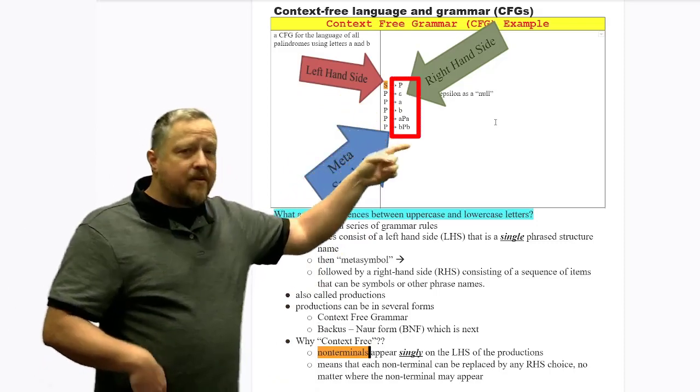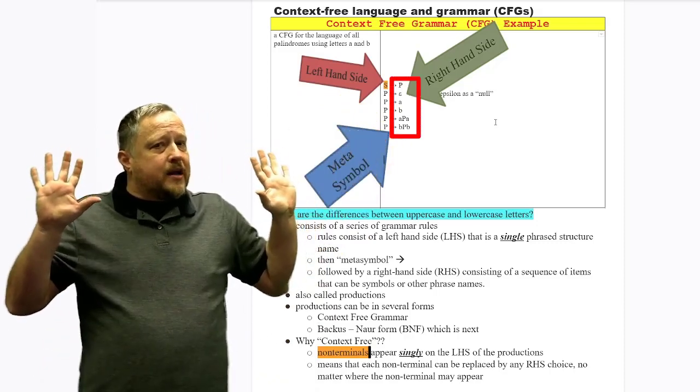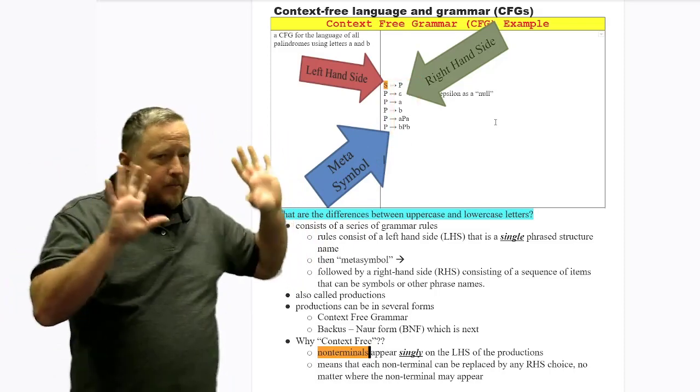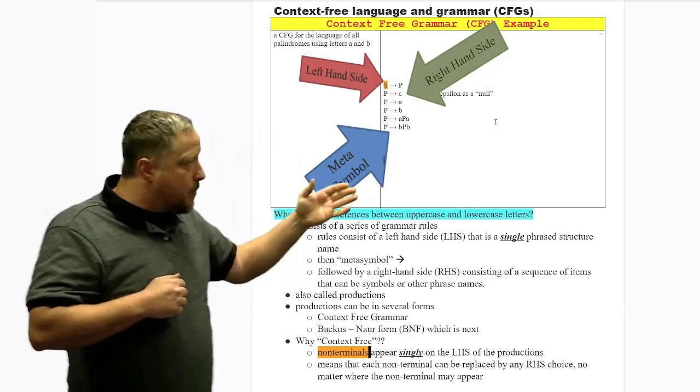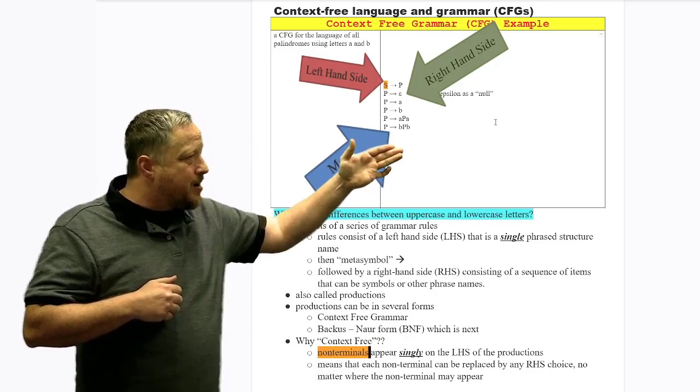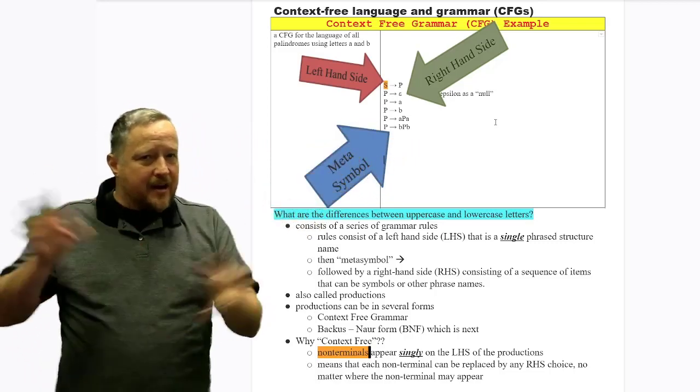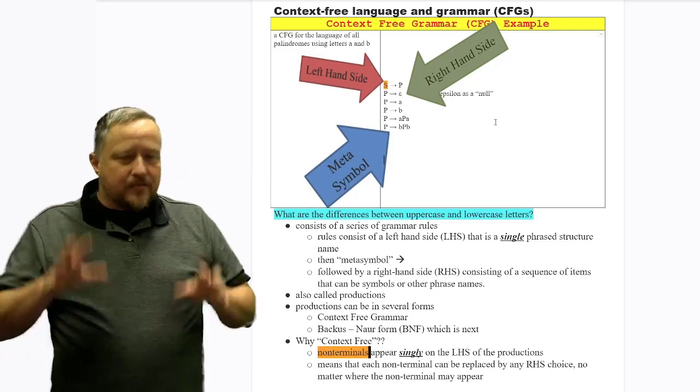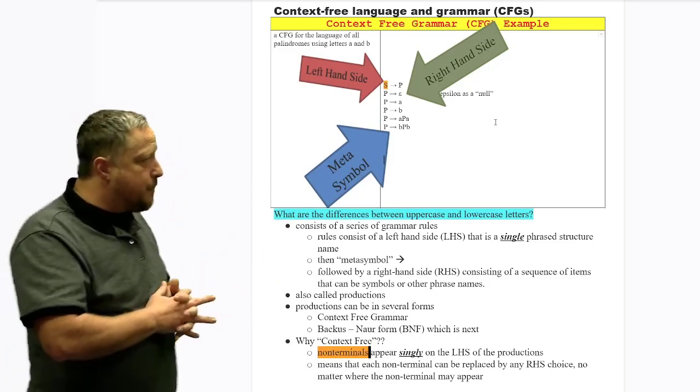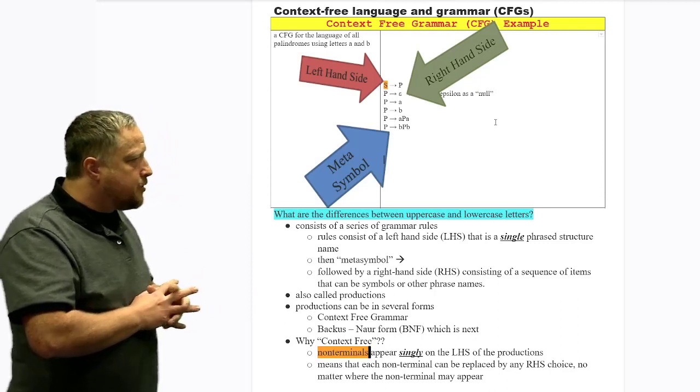Whereas you can have a mix. Notice I said nothing about the right-hand side. The right-hand side can have a mix of anything that it wants, of terminals and non-terminals, as you see here. It's just the left-hand side of the meta symbol can't have any mix of that. That's the difference between a context-free and some other grammars that are out there.